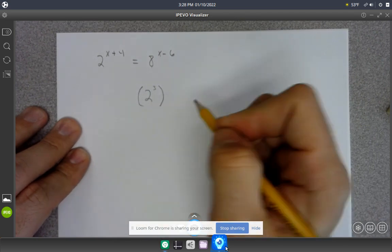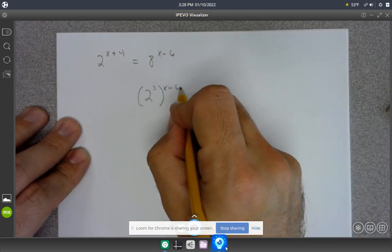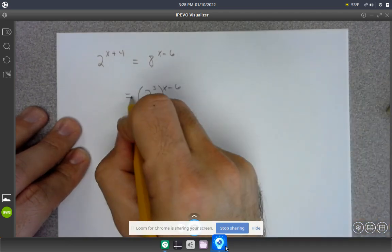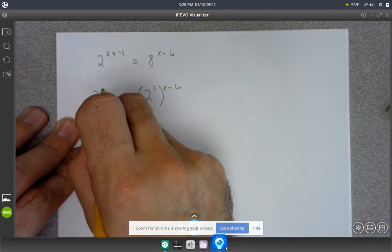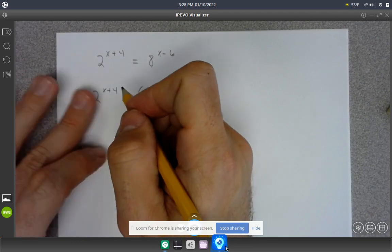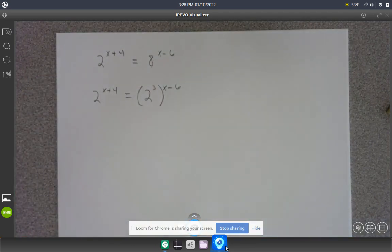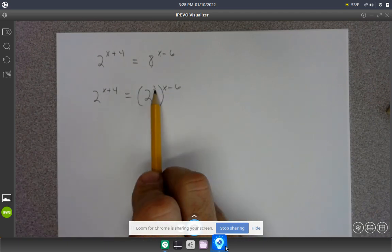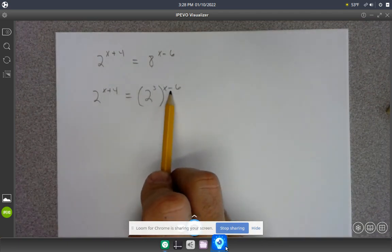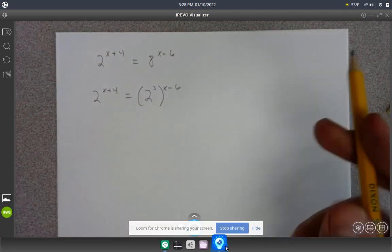Now I've got all of that stuff to the x minus 6, and the left-hand side I'll just leave alone, 2 to the x plus 4. Now I'm going to use an old trick. We've got to use some of our exponent rules. Because I've got a power to another power, I can multiply those exponents.